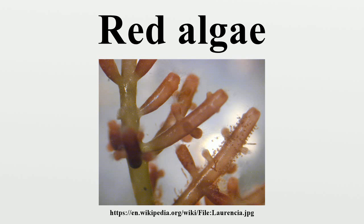The coralline algae, which secrete calcium carbonate and play a major role in building coral reefs, belong here. Red algae such as dulse and laver are a traditional part of European and Asian cuisines, and are used to make other products such as agar, carrageenans and other food additives.